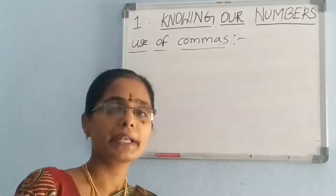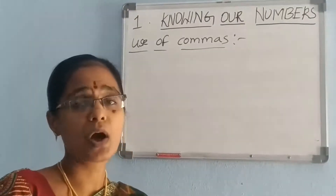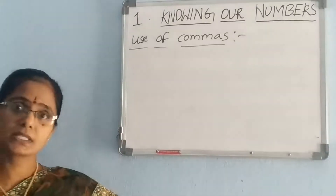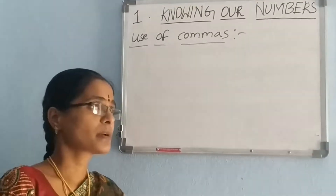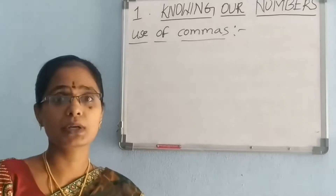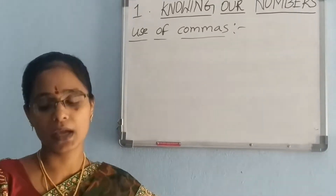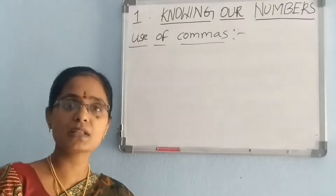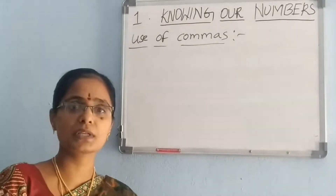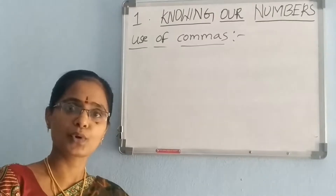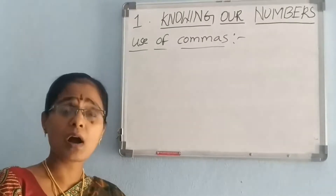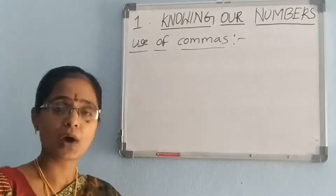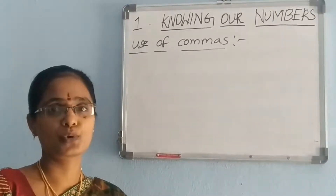We know the Indian place value system. How to keep commas in the Indian system? In our Indian system of numeration we use 1s, 10s, 100s, 10,000s, lakhs, crores. The commas are used to mark 100s, 1000s, lakhs, and crores.